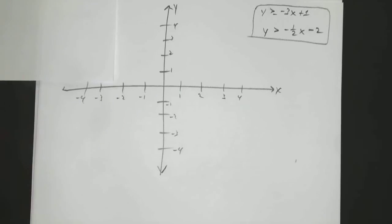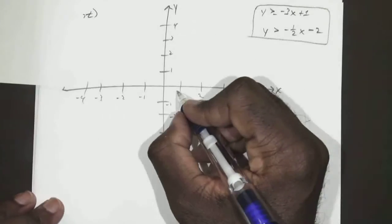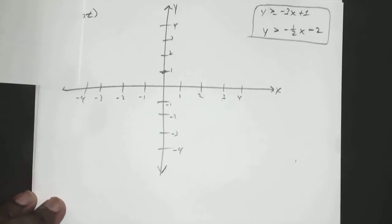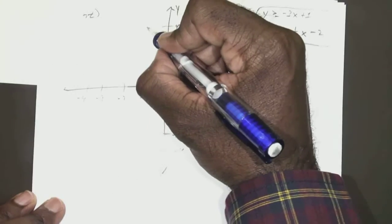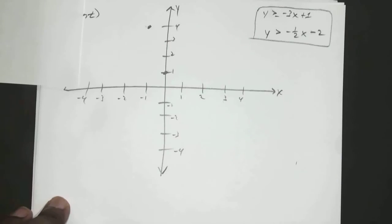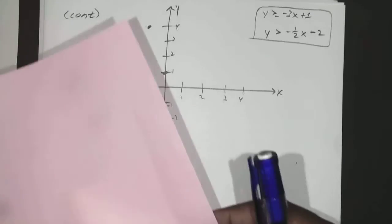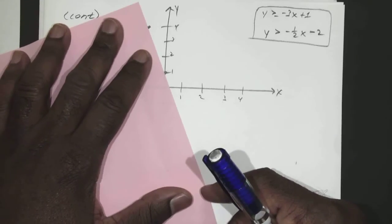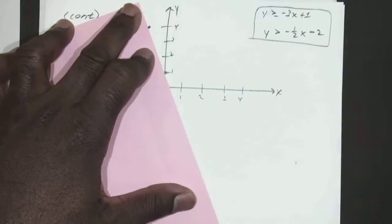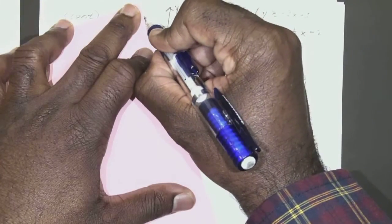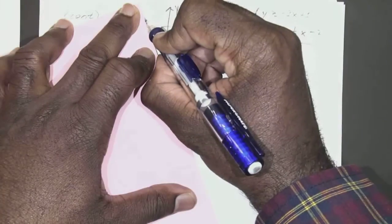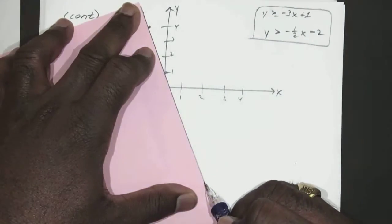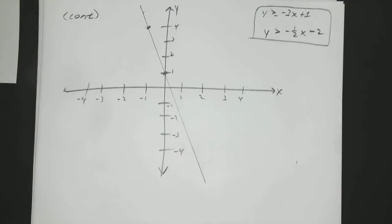So, remember for y equals 3x plus 1, we had 0, 1, which is right there, and we had negative 1, 4. It is right there. So, we go ahead and graph those two. It goes through about right there, and that's a solid line.